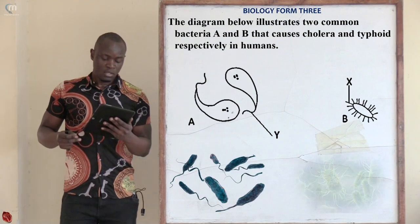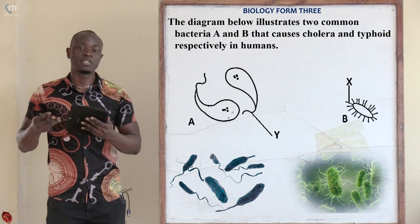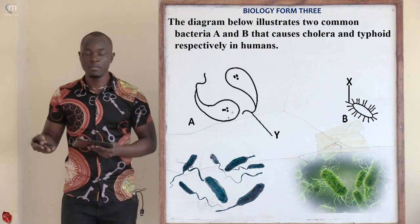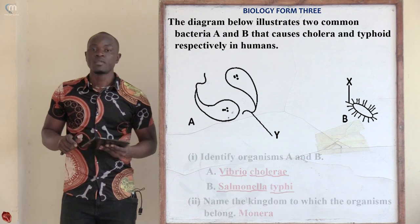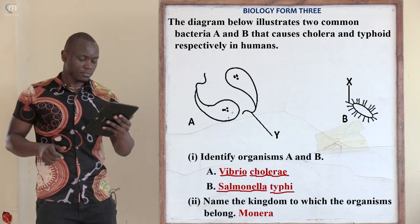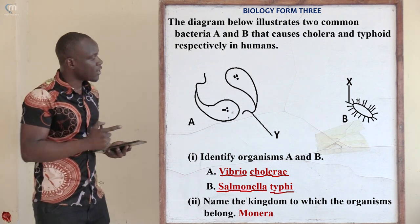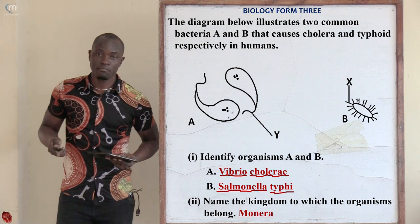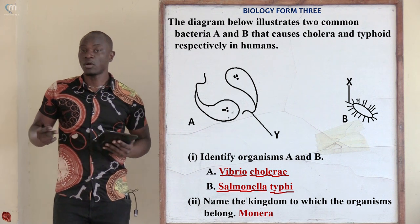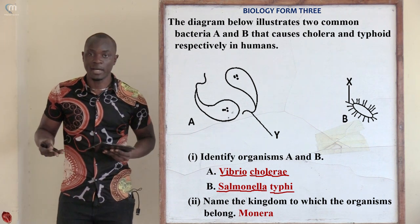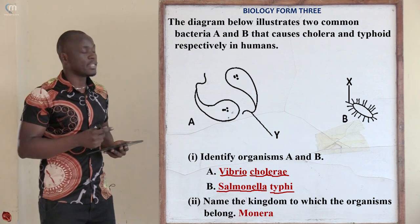For question number two, the diagram illustrates two common bacteria: bacteria A, which causes cholera, and bacteria B, which causes typhoid. Roman numeral one asks us to identify organism A and organism B. Organism A is Vibrio cholerae and organism B is Salmonella typhi. Vibrio cholerae bacteria look exactly like a comma symbol.